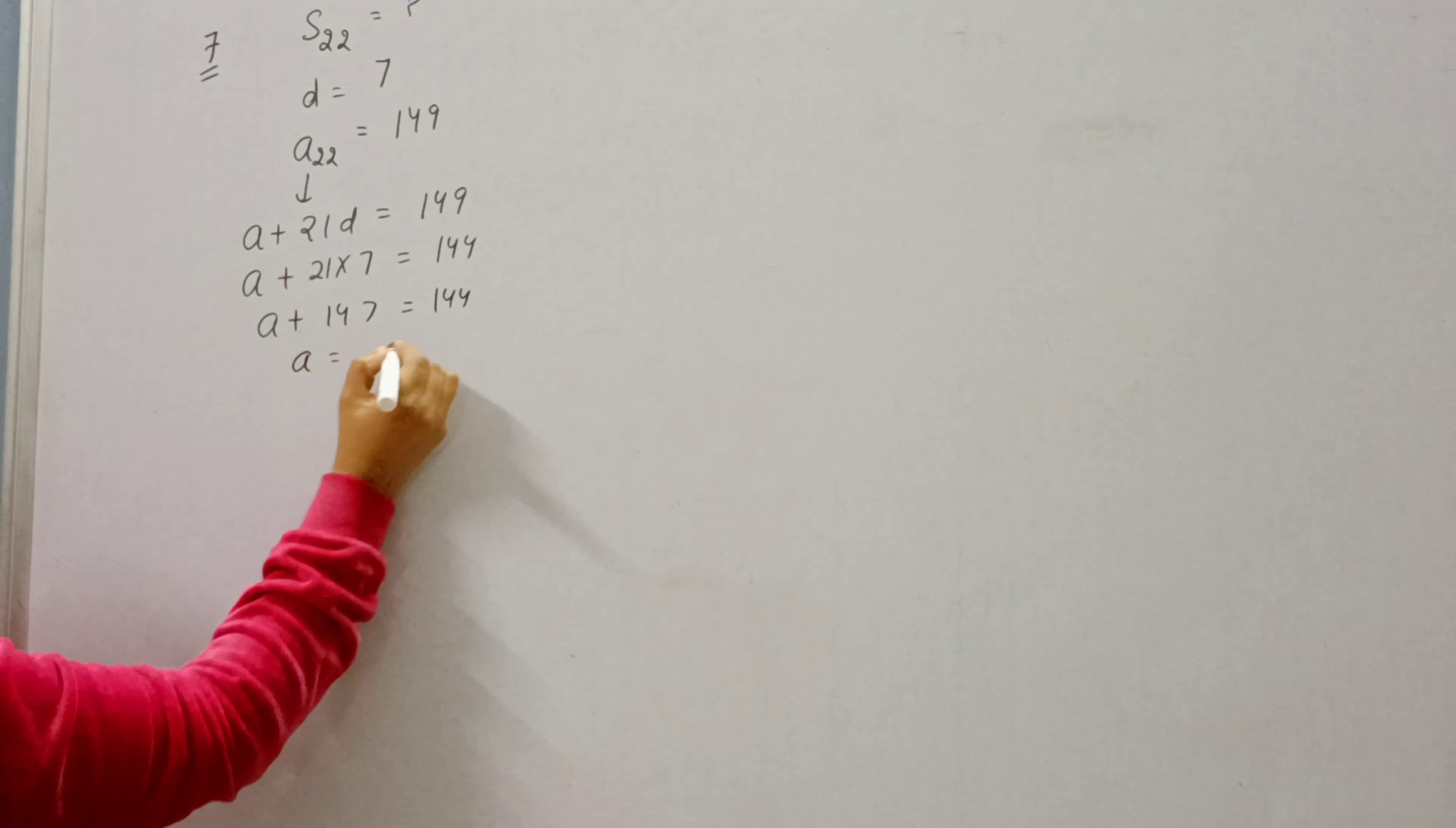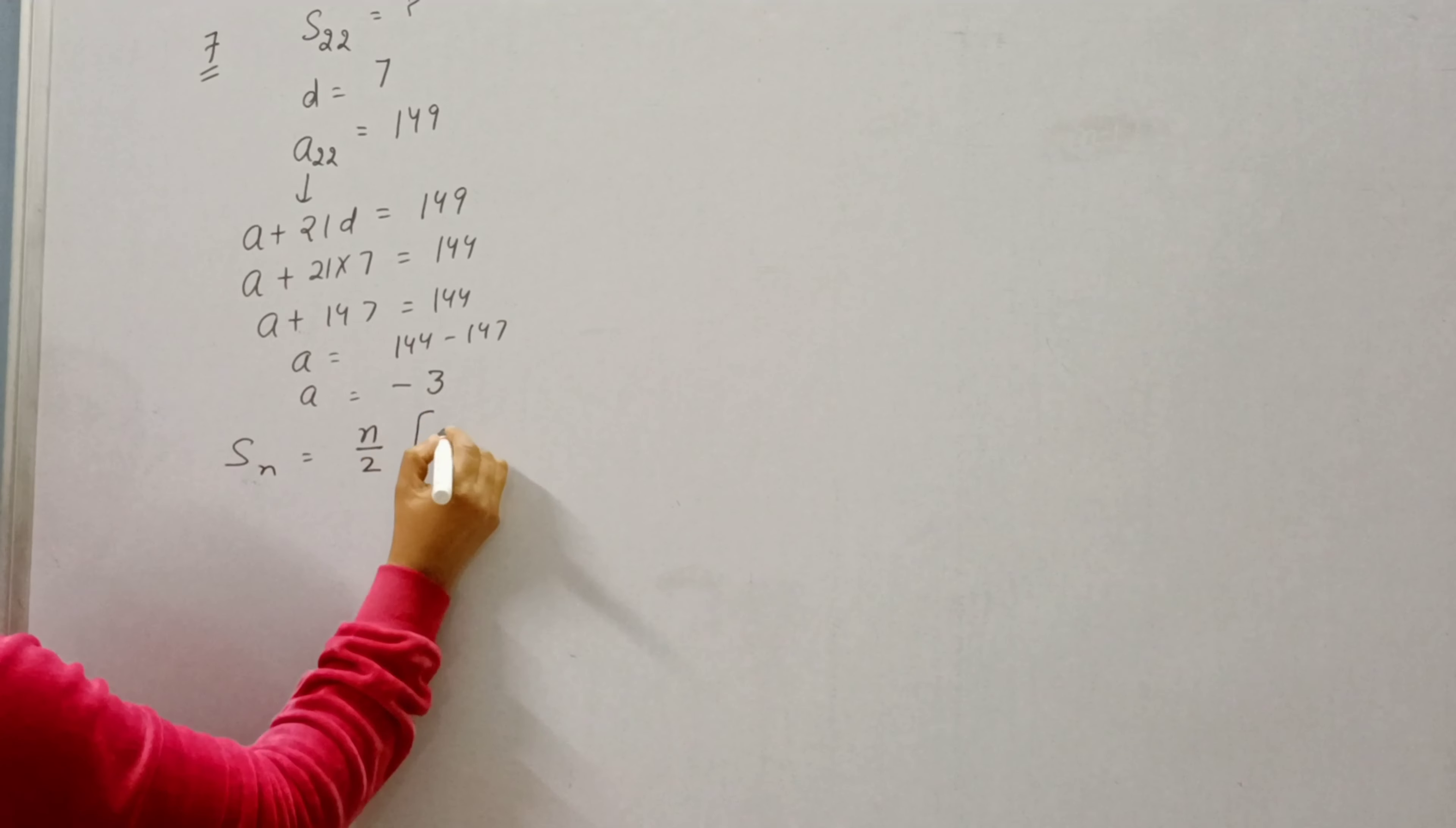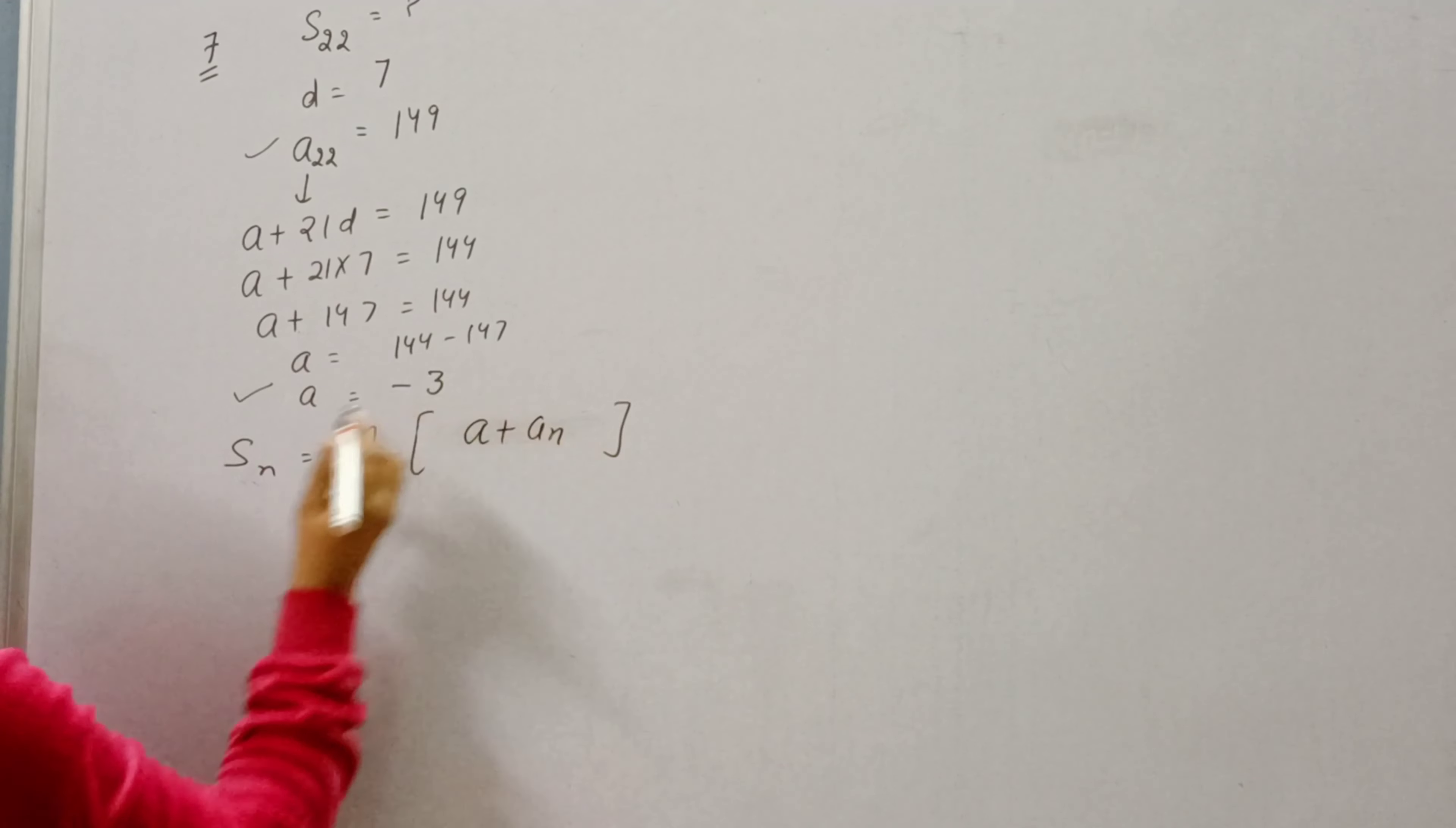A will become 144 minus 147 that is minus 3. Now we need to find S22, so we will apply formula of SN: N by 2 into 2A plus N minus 1D. Or simply because A is known to us and AN is known to us, we can simply apply A plus AN.